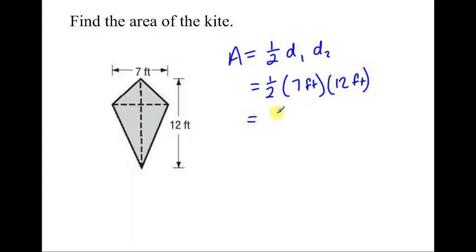So we've got half of seven feet multiplied by 12 feet. That's going to be half of 84. So half of 84 is 42. And then don't forget those feet. Those feet multiplied by these feet give us those typical area units of square feet for our final answer.